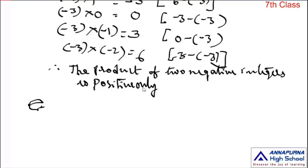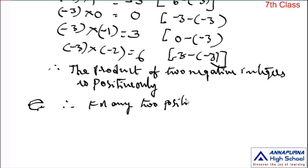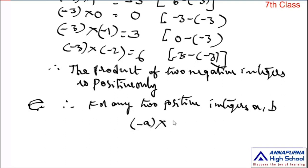The product of two negative integers is positive only. Therefore, for any two positive integers a and b, minus a into minus b is equal to a into b.